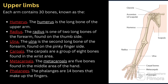Next comes the upper limb. Each arm contains 30 bones. First is the humerus — a long bone of the upper arm. Second is the radius — one of the two long bones of the forearm, found on the thumb side. Third is the ulna — the second long bone of the forearm, found on the pinky finger side. Fourth is the carpals — a group of eight bones in the wrist. Fifth is the metacarpals — five bones in the middle area of the hand. Last are the phalanges — 14 bones that make up the fingers.